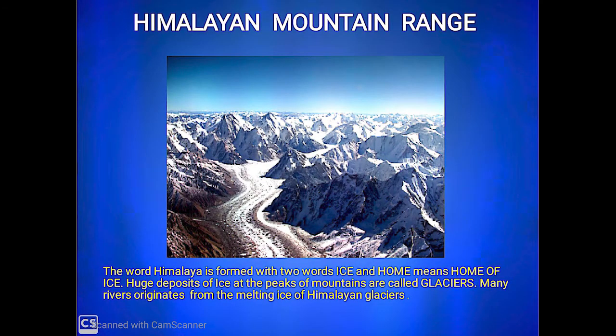Students, as you see in this picture, the Himalayan mountain range is in the north of India. A mountain range means many mountains one after another in a row. The Himalayan mountain range is very extensive. The word Himalaya comes from Sanskrit — Him and Alay. Him means ice and Alay means home, so it means home of ice.